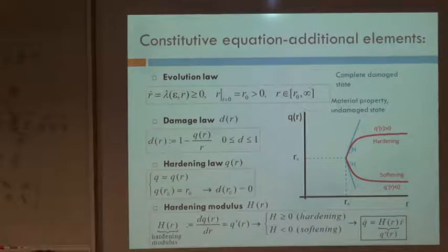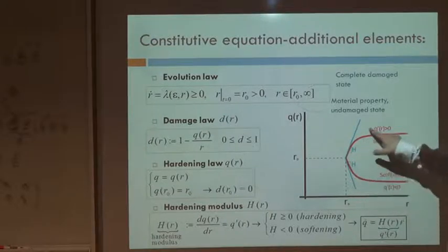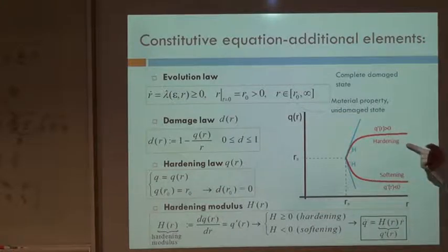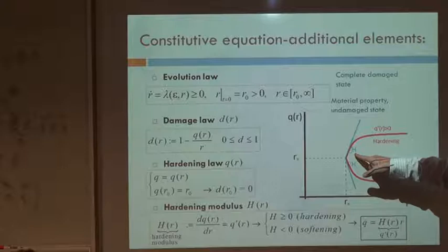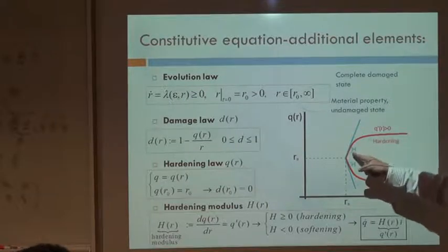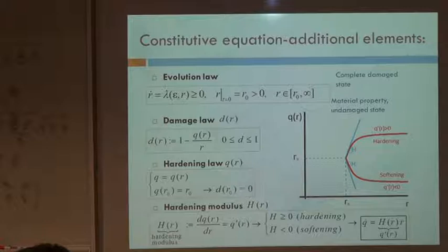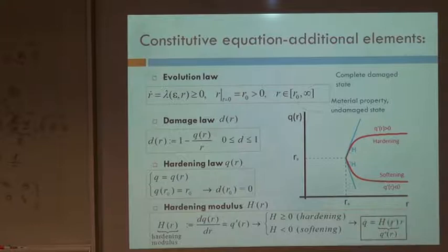The slope of this curve — the derivative of Q with respect to R — plays a fundamental role in these inelastic materials. It's called the hardening modulus. The hardening modulus is the slope at every point of the hardening law. A positive value of the hardening modulus indicates that the material hardens; a negative value means that the material softens.